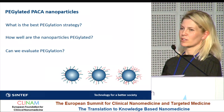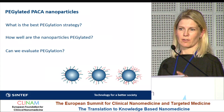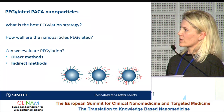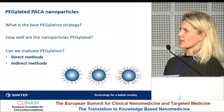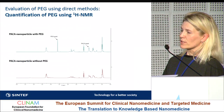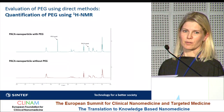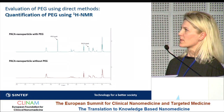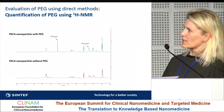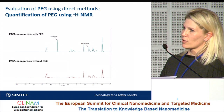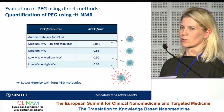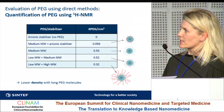To better understand the pegylation of the particles, we have been using both direct and indirect methods. First, we have been using proton NMR to quantify the amount of PEG on the particles, which has proven to be quite a useful method. We use the NMR spectra, and here you can see a distinct peak from the PEG and from the polymer material. We use these spectra to calculate the number of PEG molecules on the surface.